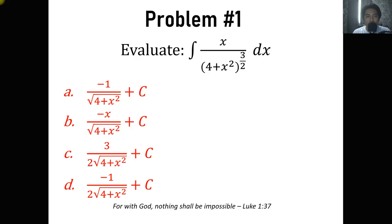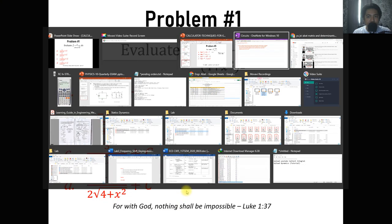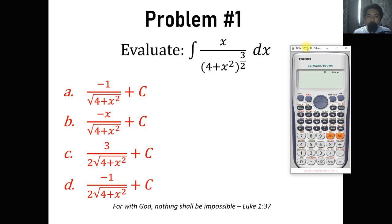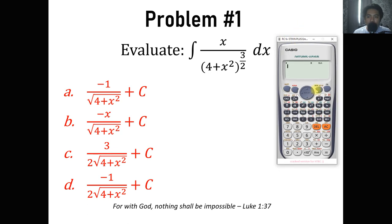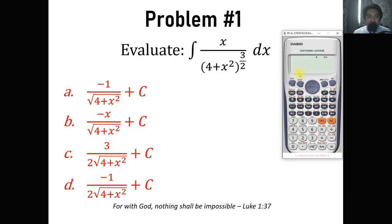Problem number one: evaluate the integral of x all over (4 plus x squared) raised to 3 halves, dx. The very first thing we are going to do is set our calculator to radian mode, just to make sure that if we encounter trigonometric functions it would not be a problem. Then we are going to type this expression as a whole without the integral sign.